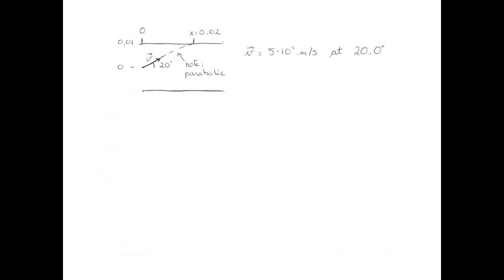Here's our diagram of the situation. I've drawn the two plates that create the uniform electric field, the velocity vector of the electrons as they enter, and the electrons hitting the plates 2 cm away from the place where they entered the field. I added a note to myself that the trajectory of the electrons is parabolic, but I'm not sure which direction or shape it has, so I'll think about it later.